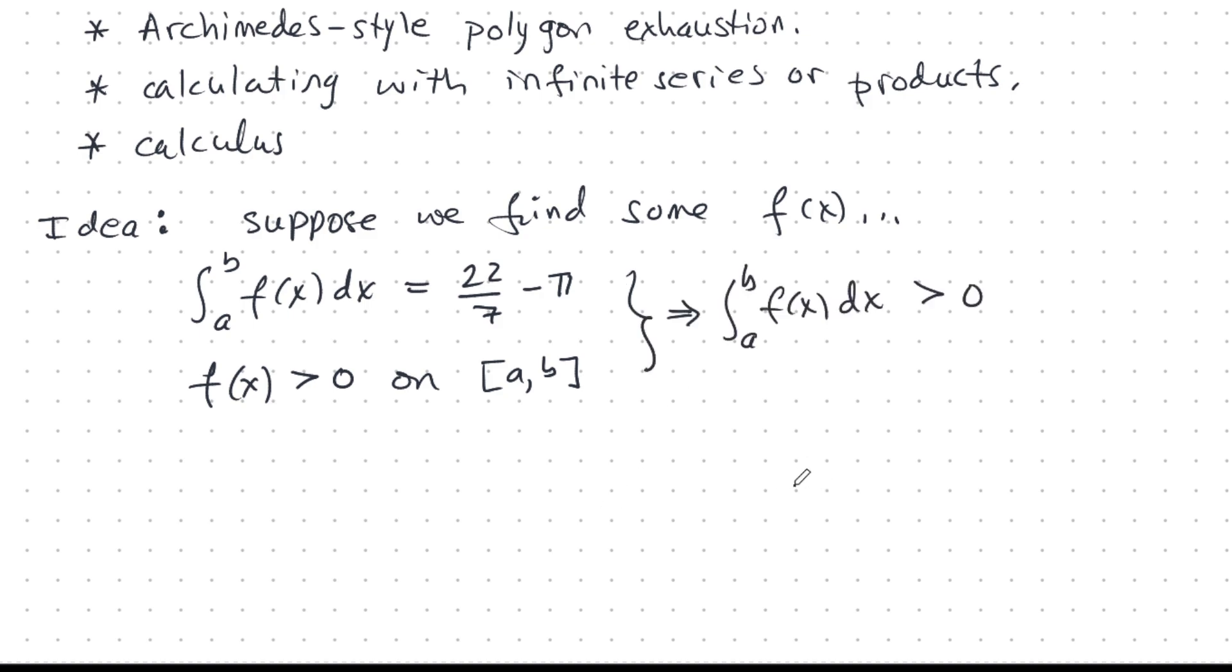This is really great because now the integral is strictly positive. So this is a strictly positive integral, and that implies that 22 over 7 minus pi is strictly positive, and so pi is less than 22 over 7. If I can find such an f, I'm done.